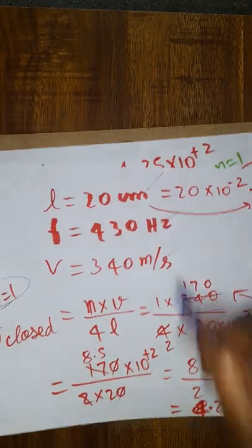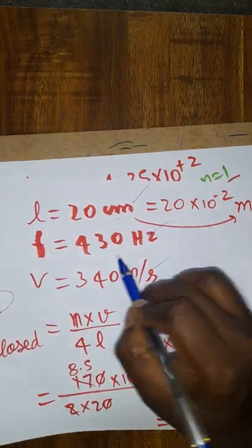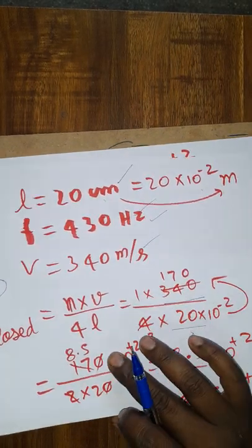The data which is given in the question: length is given in centimeters, I converted it as meters. Frequency is given as 430. Velocity you can take it as 340.